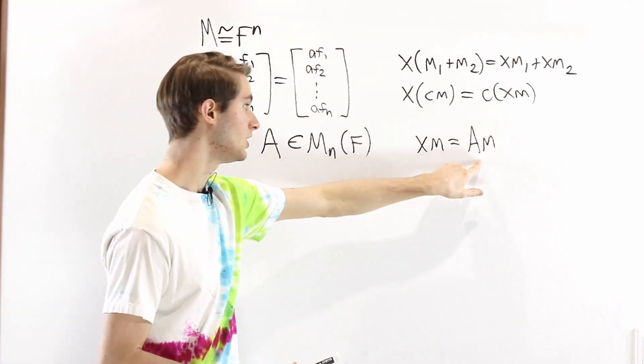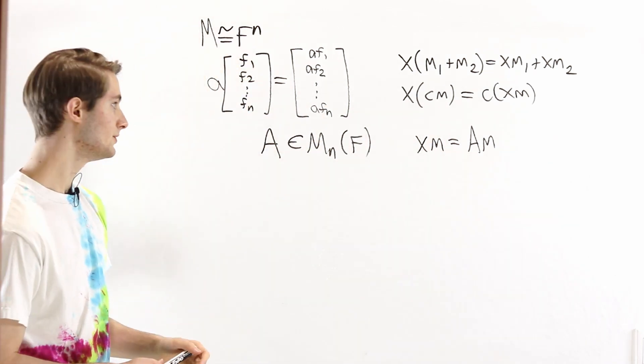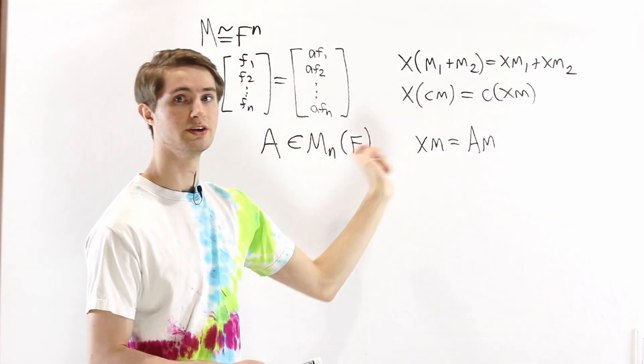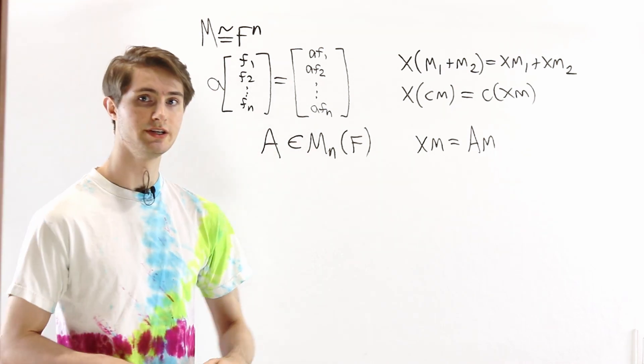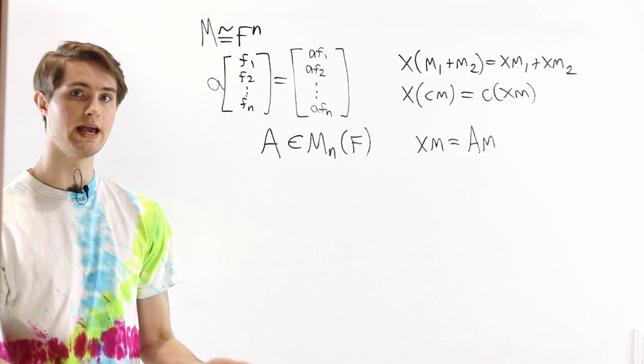So this gives us a concrete way, once we have these vectors for the module, to describe what does multiplication by x look like. And this is actually enough to describe multiplication by any polynomial.